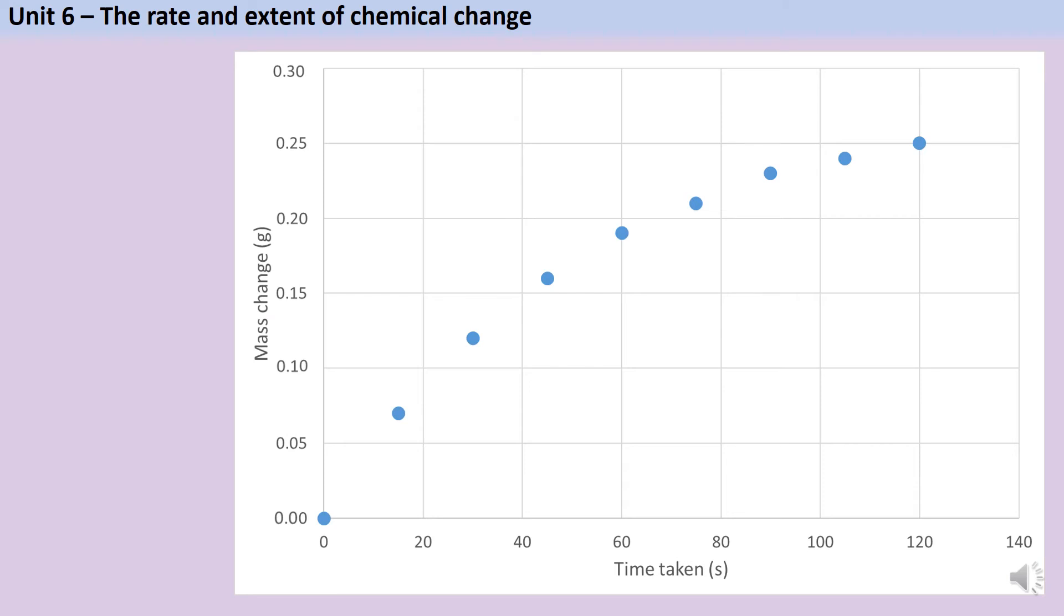Having collected my data and calculated the mass change, I can put these data into a graph which will make it easier to identify trends. It's still important that I identify the units and these should be labelled in the axes titles. You may be asked to draw a line of best fit and this should follow whatever pattern your data show. Here, my data show a smooth curve, so my line of best fit should also be a curve.